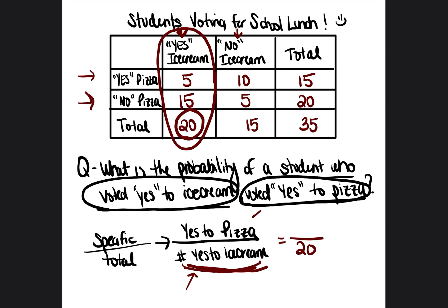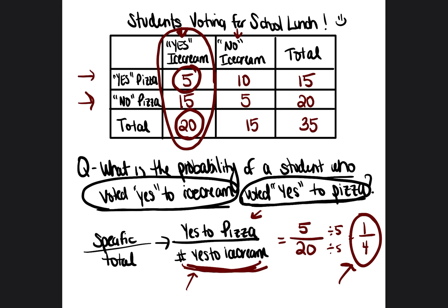The specific ask is yes to pizza. Out of the yes-to-ice-cream column we just circled, yes to pizza is 5. So we have 5 out of 20. Dividing by the greatest common factor gives us 1 over 4. That is the probability — or if they asked for a percentage, 1 over 4 equals 25%.